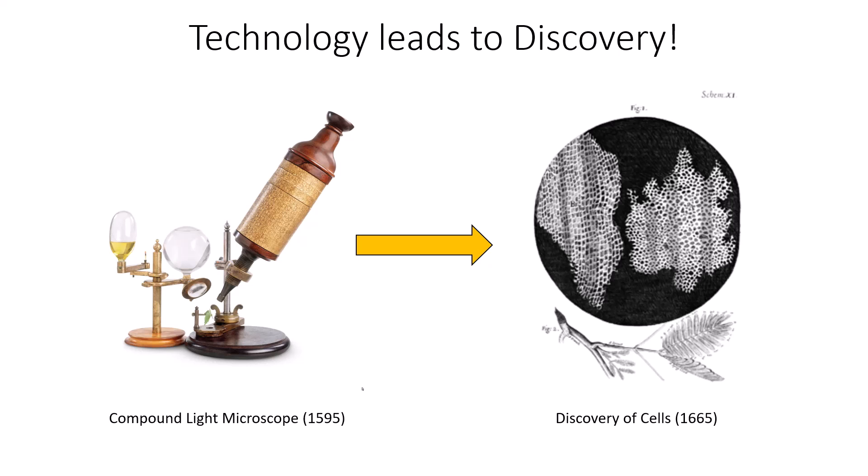Until cells were discovered, a lot of people at the time thought that spontaneous generation was a thing — that living things spontaneously appeared from thin air. They didn't know that living things were composed of cells or that cells were the basic unit of life. So not only did the compound light microscope open up our eyes to the micro world around us, but it also led to our development of cell theory.